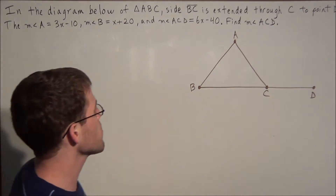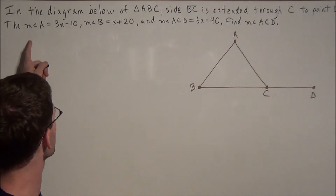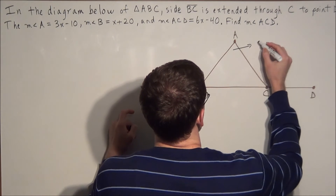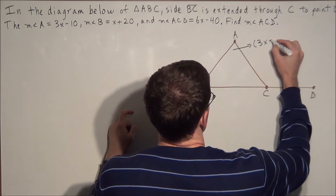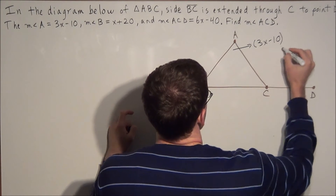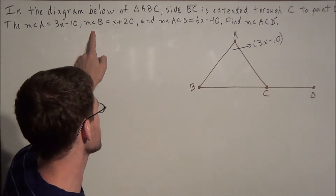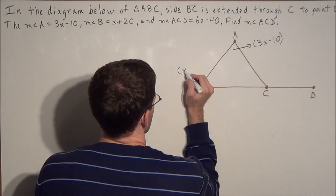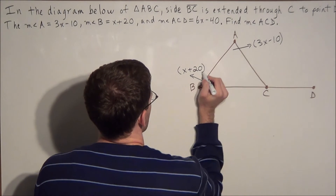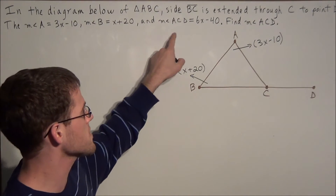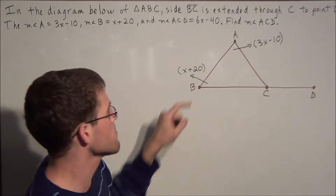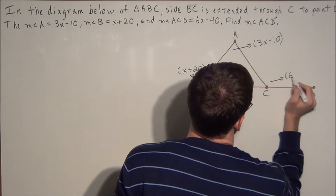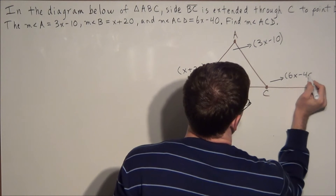The first thing we want to do is label the information that was given to us. We know that the measure of angle A is equal to 3x minus 10, so we can label this angle here as 3x minus 10. Next, the measure of angle B is equal to x plus 20, so we label this angle here as x plus 20. And finally, the measure of angle ACD is equal to 6x minus 40, so we label this angle here as 6x minus 40.